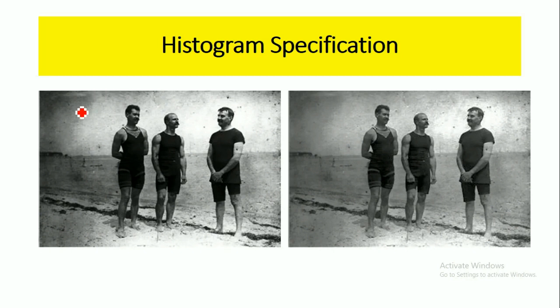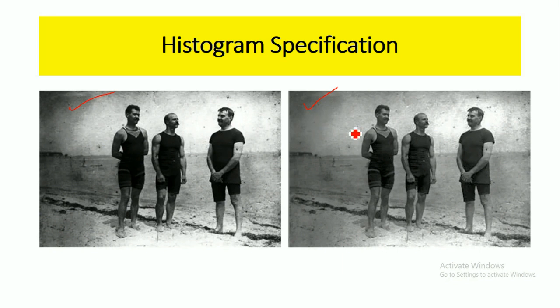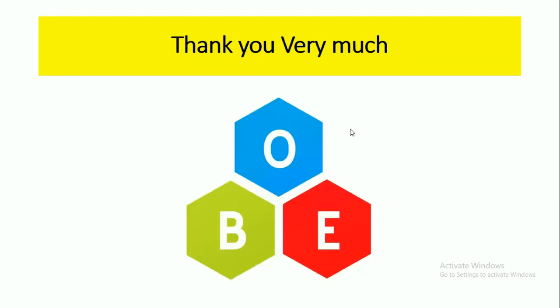Here is the original image and here is the targeted image. Previously we had a low contrast image, but now by doing histogram specification or matching, we get a better quality output image. Thank you very much for watching this video. To watch more videos, please subscribe to my channel, OpenBox Education.